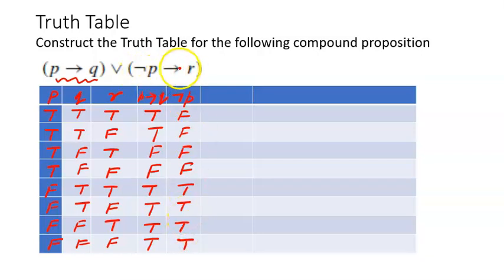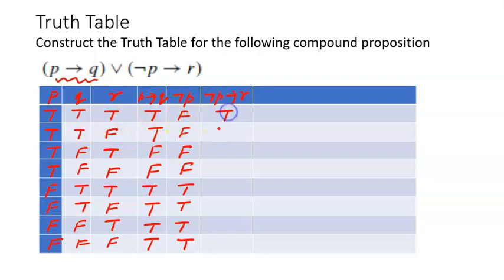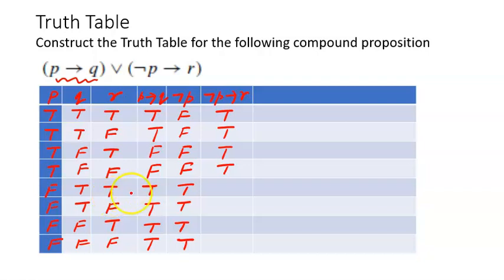Next is negation of P implies R. We look at the negation of P column and the R column. When negation of P is false, the result is true regardless of R — so the first four rows are true. When negation of P is true: true and true is true, true and false is false, true and true is true, true and false is false.